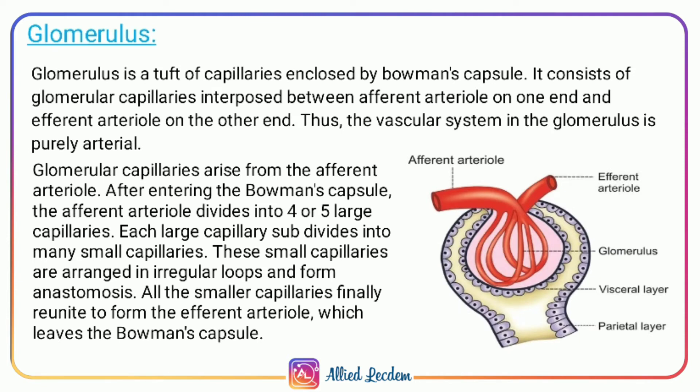The tuft of capillaries enclosed by Bowman's capsule is the glomerulus. The glomerular capillary is inserted between the afferent arteriole on one end and the efferent arteriole on the other end. The vascular system in the glomerulus is purely arterial. Glomerular capillaries arise from the afferent arteriole after it enters into the Bowman's capsule.